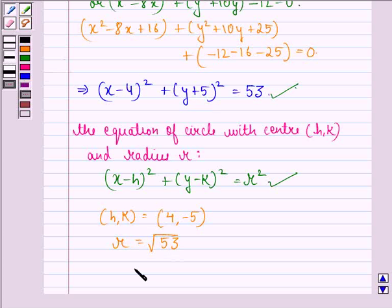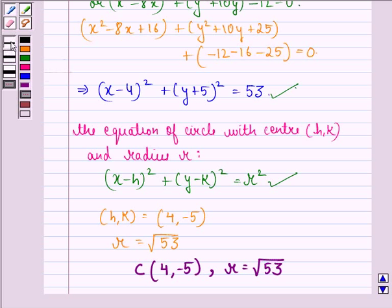Therefore our answer to this question is that center is 4, minus 5 and radius is equal to root 53. So this is our answer to the question. I hope that you understood the question and enjoyed the session. Have a good day.